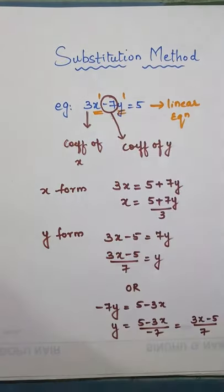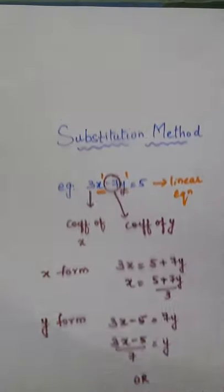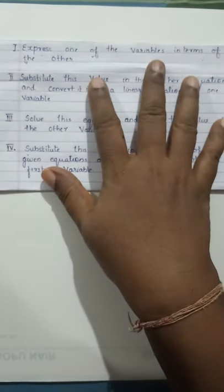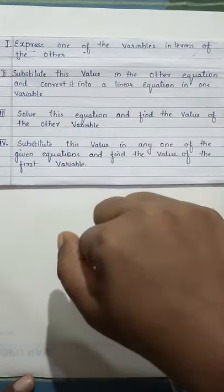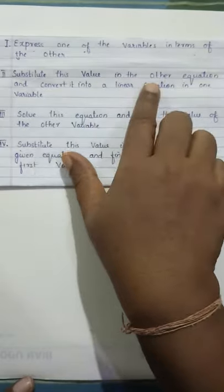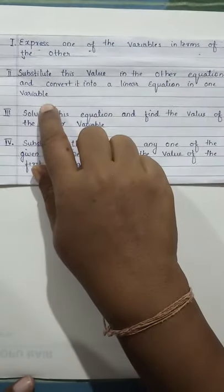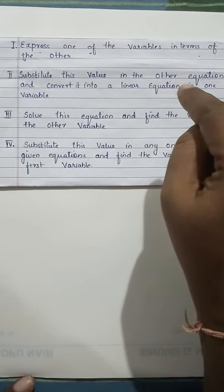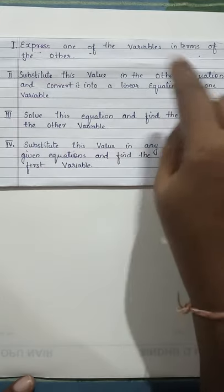Now we will come to our substitution method. Substitution methods involve 4 steps. The first step is express one of the variable in terms of other. That is what we have learned now. Then second step is substitute this value in the other equation and convert it into a linear equation in one variable. Third step, solve that equation and find the value of the other variable. And then substitute this other variable and find the value of the first variable. So these are the 4 steps.